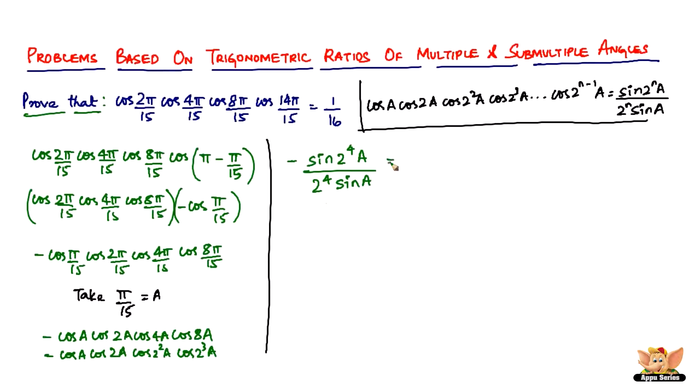So what next now? What is this? This is going to be equal to minus of sine 16a divided by 16 sine a. So we can write 16a as minus sine of 15a plus a, the reason for this you'll see shortly, 15a plus a divided by 16 sine a.